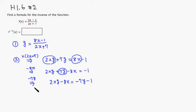Alright, then you notice that since we collect all the terms with x in it on the left, we can factor out x. So we have x times 2y minus 8 is equal to negative 7y minus 1, right?